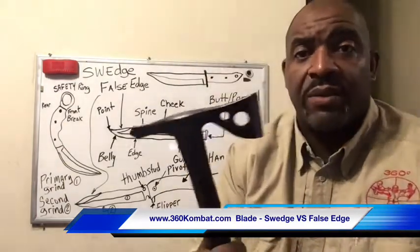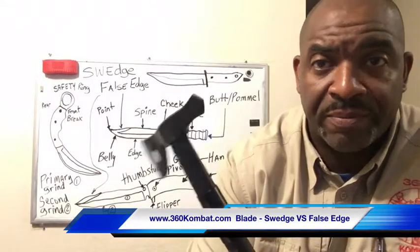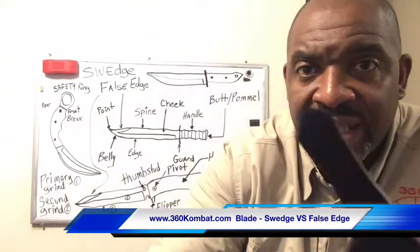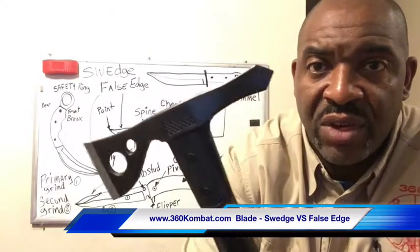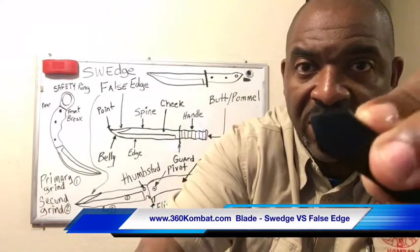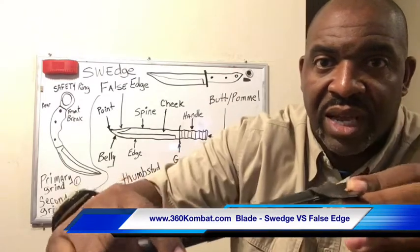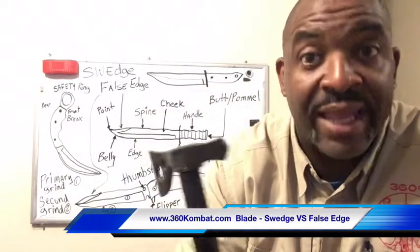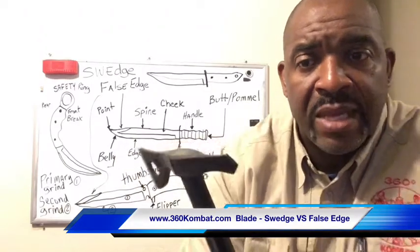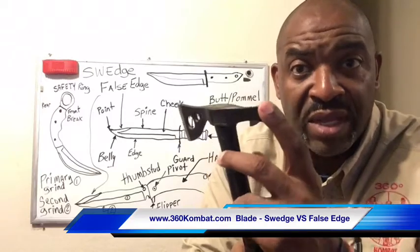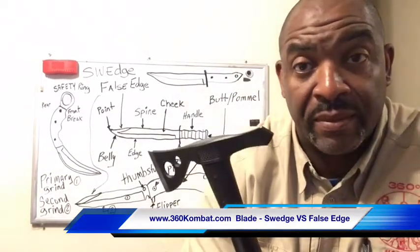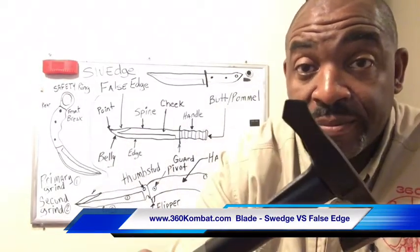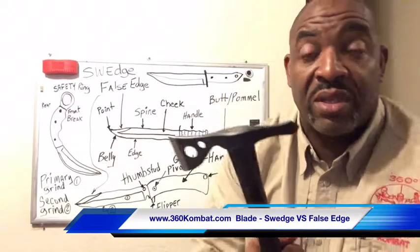Now let's look at another example — this tomahawk. Look at the back of it; this is the spine. It doesn't have a pronounced edge on it, but it does have bevels on each side. I can still penetrate — coconuts, legs, heads, body parts, muscle — but I still can't just cut myself on it. However, with weight behind it, it will penetrate. This would be considered a false edge.